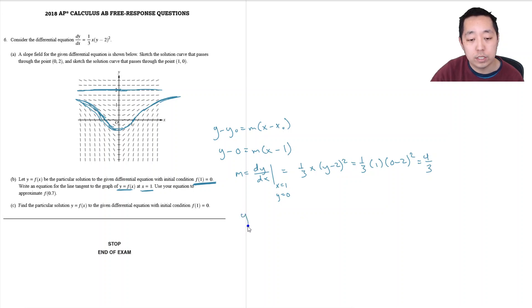So my equation ends up being y equals four thirds times x minus one. Now use that equation to approximate f of 0.7. f of 0.7 is approximately equal to f of one minus the slope times... actually you just use the equation of the tangent line. We're basically using a linear approximation.